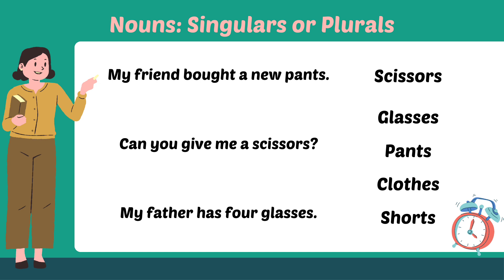If you look at scissors, they have two blades. If you look at glasses, they also have two sides. If you look at pants, pants can be two sides. Shorts can also be two sides. If you look at pajamas, they have two sides. If you look at headphones, we use them with two sides as well.